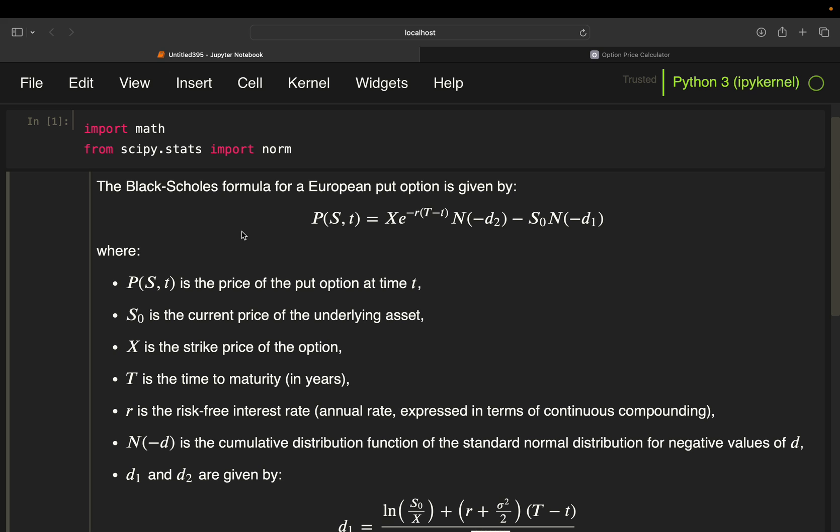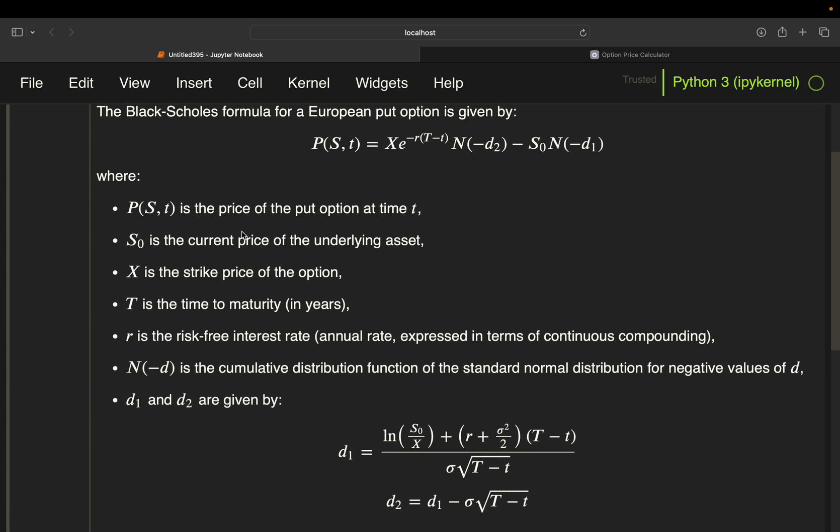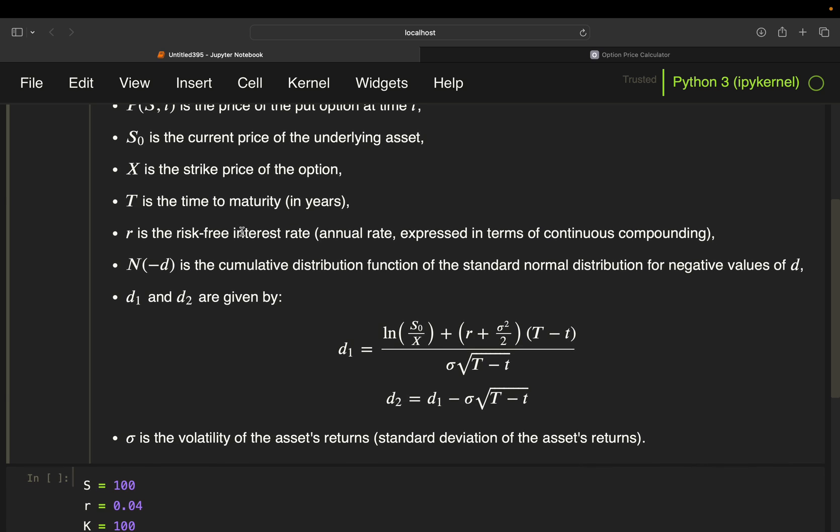times the CDF of minus D2, minus the current price, times the CDF of minus D1. Important, D1 and D2 are exactly the same as for the call option case.